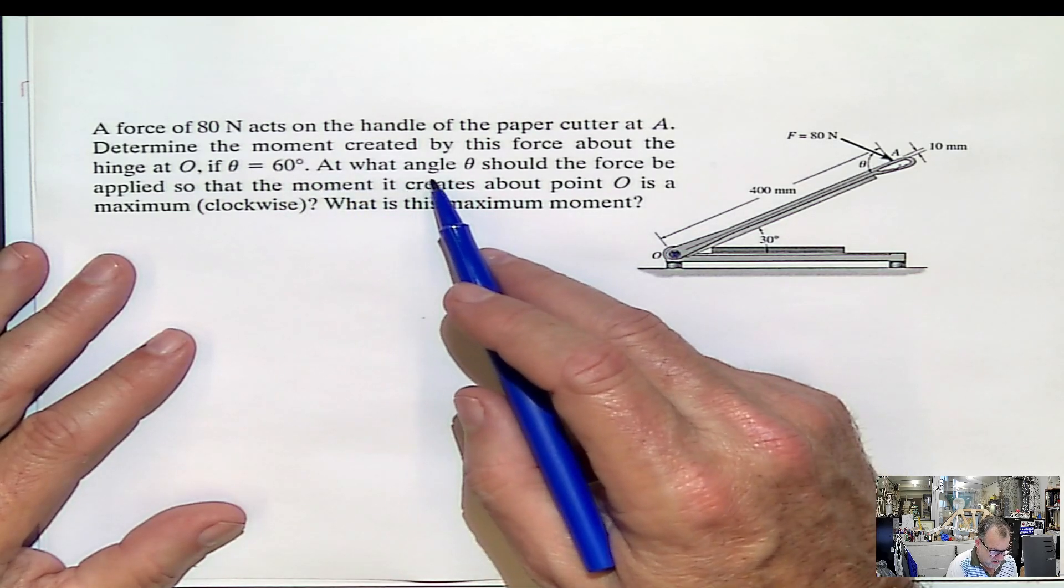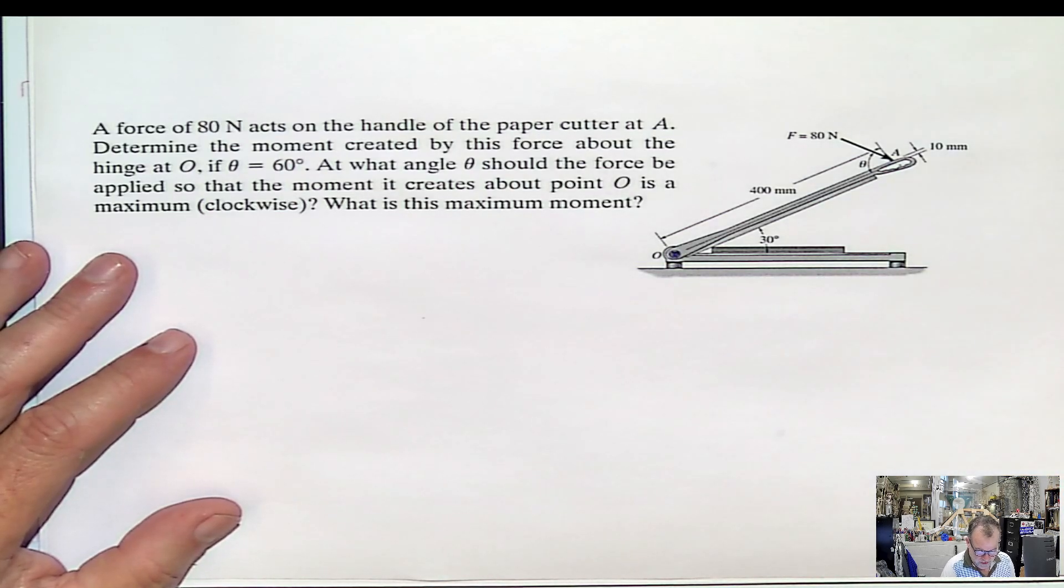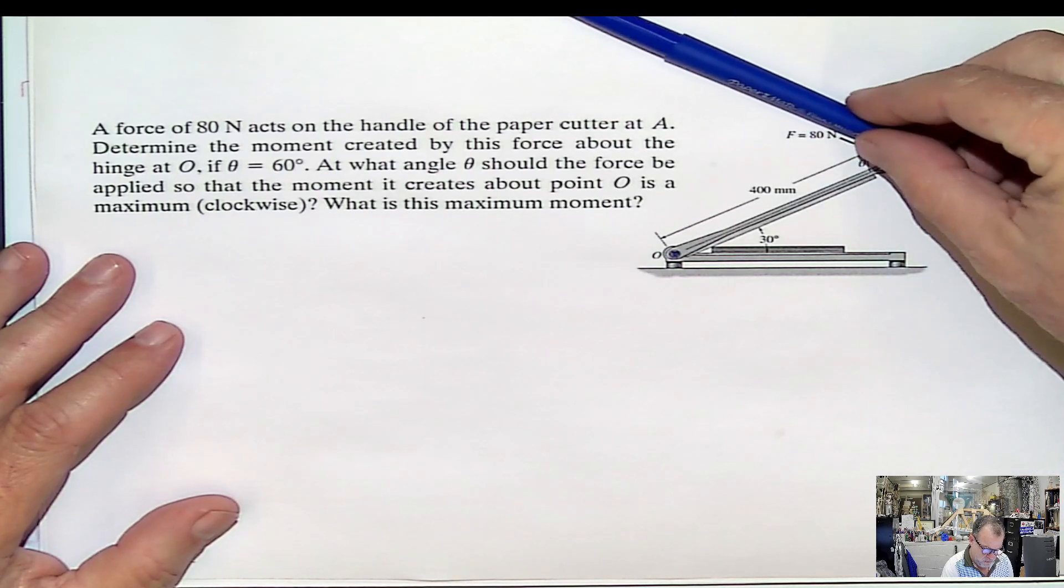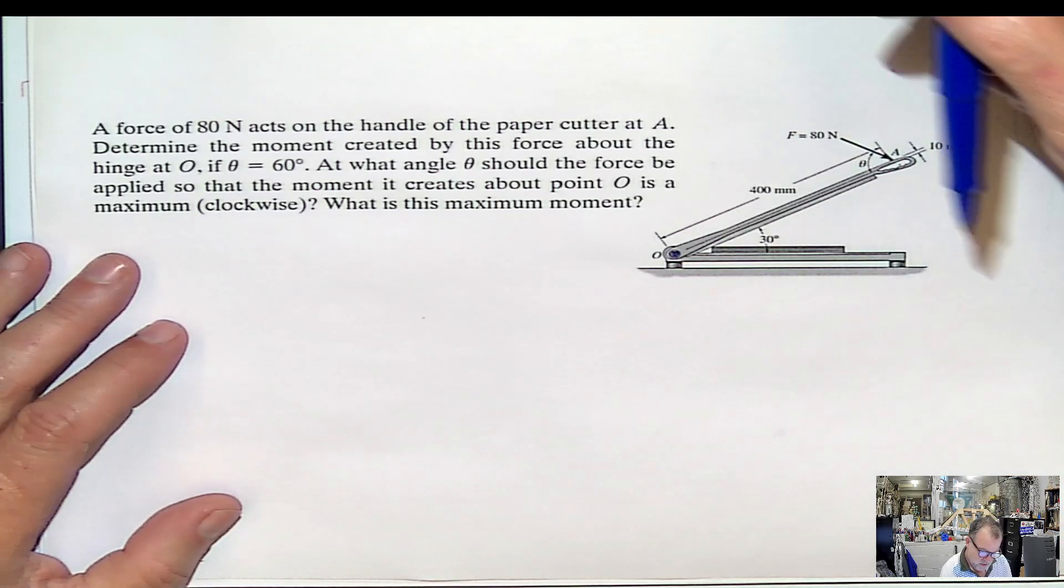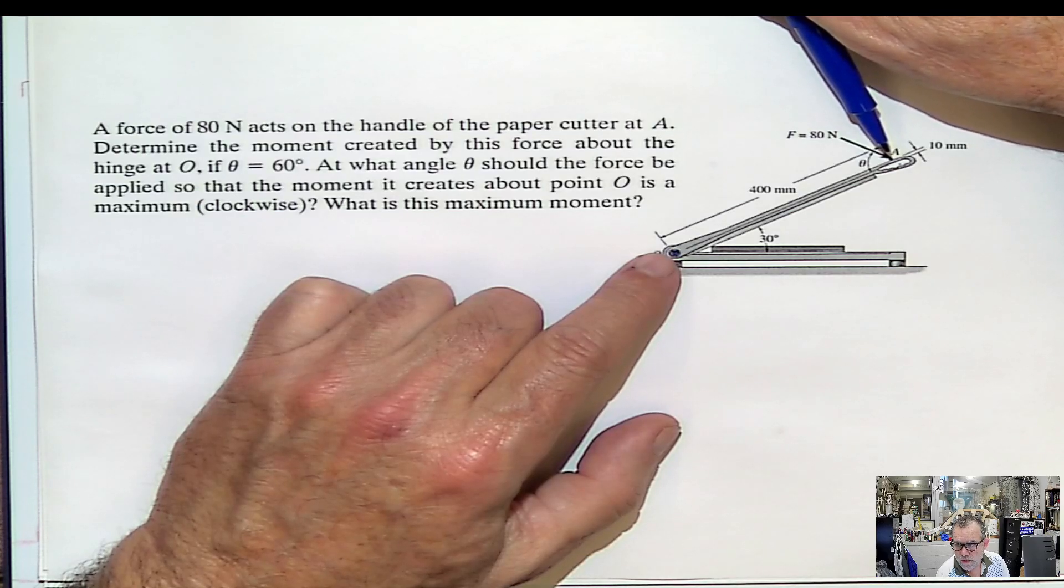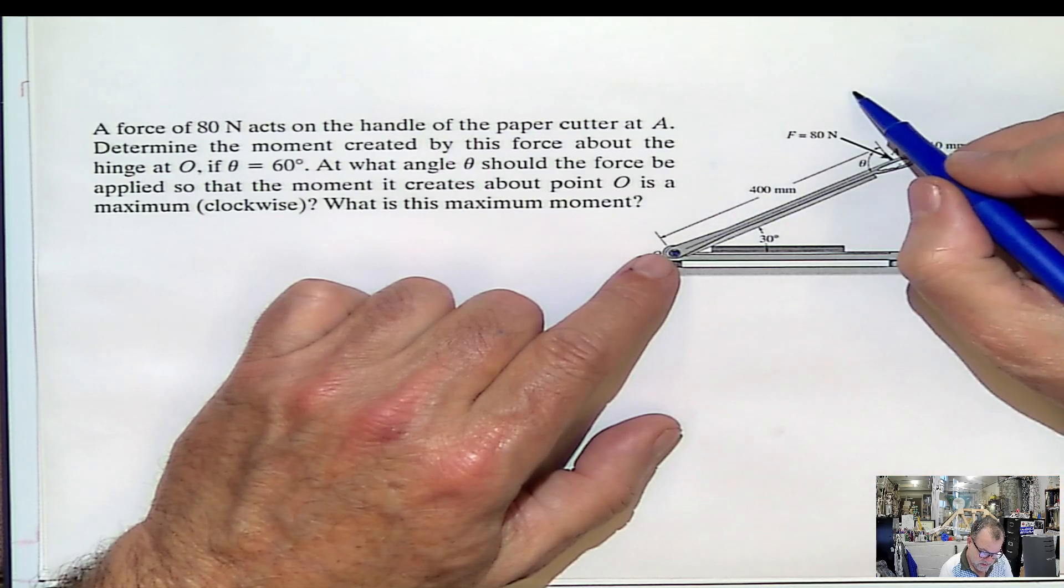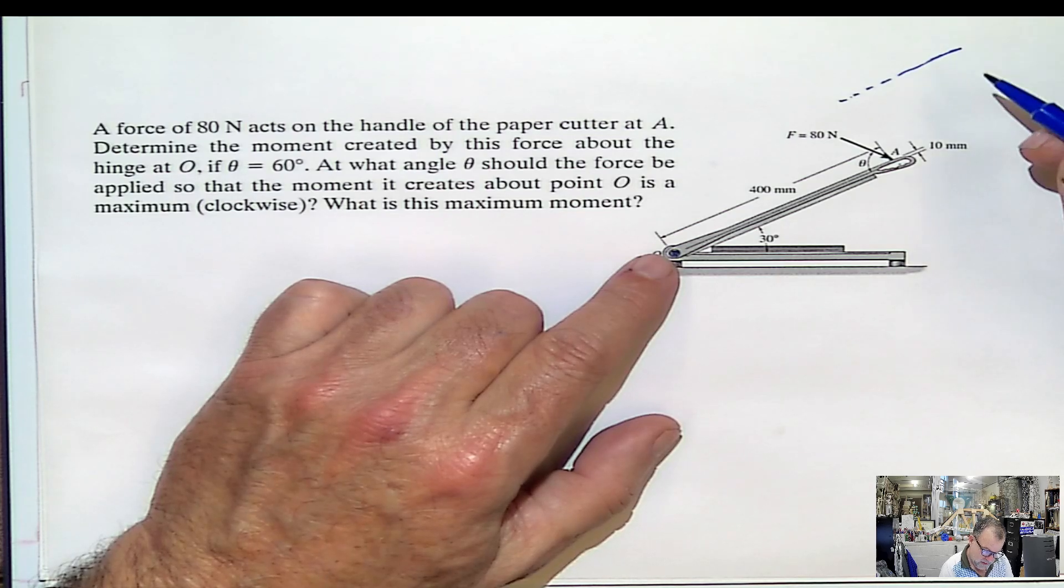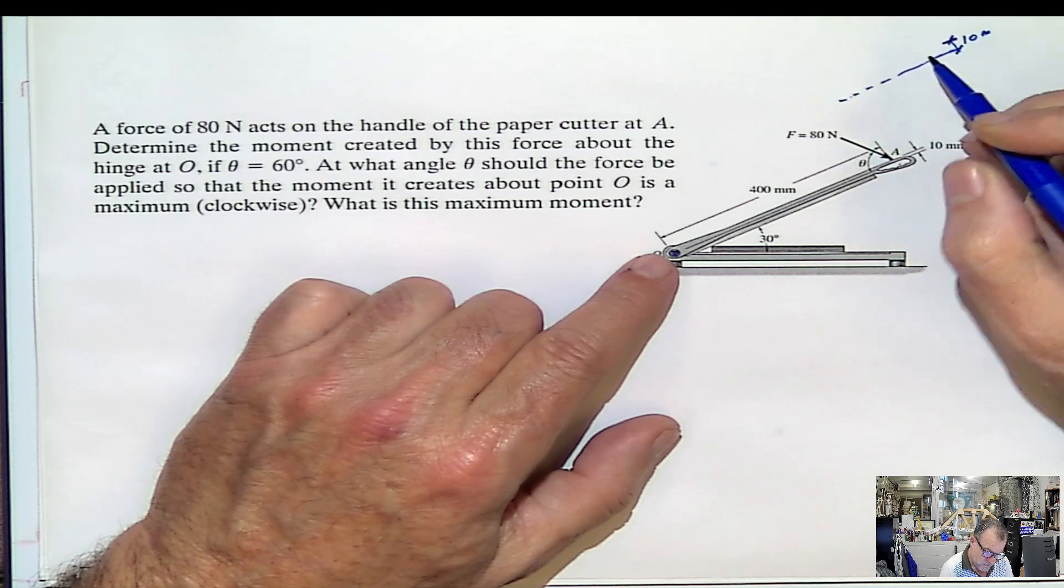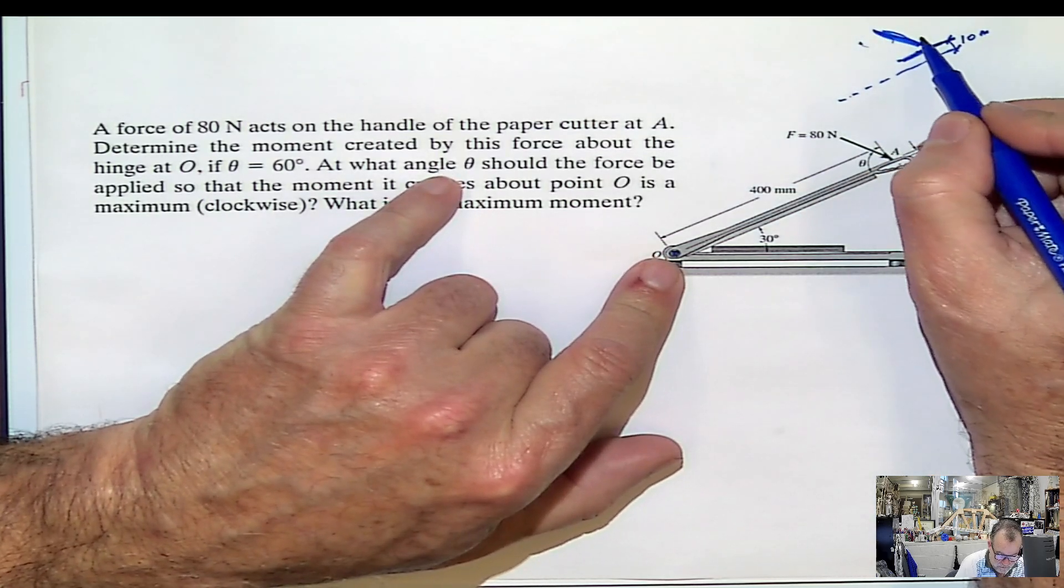And then it says, at what angle should the force be applied so that the moment it creates is maximum? Be careful, because if you just look at the problem and don't pay attention too much, the maximum angle or the angle for the maximum moment should be when the distance and the force are perpendicular. And you can feel compelled to say 90 degrees. And that would be true, except the force is not applied exactly at this line.